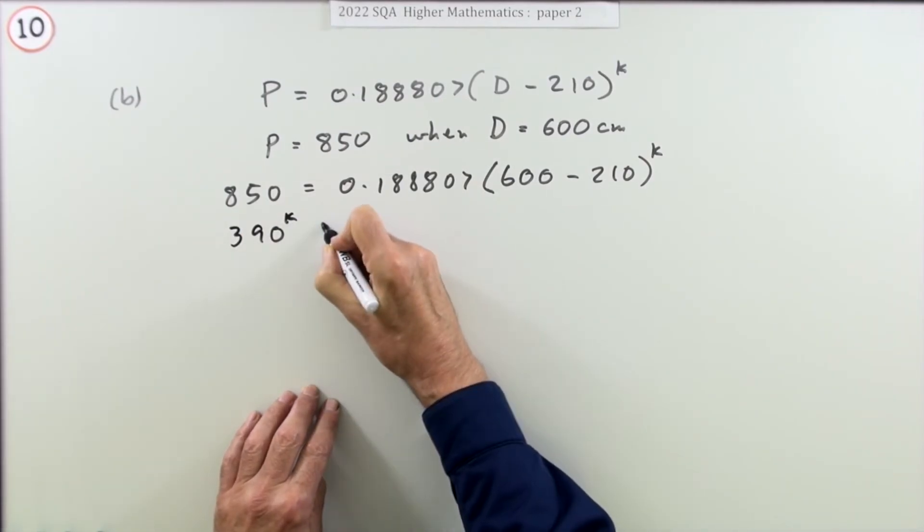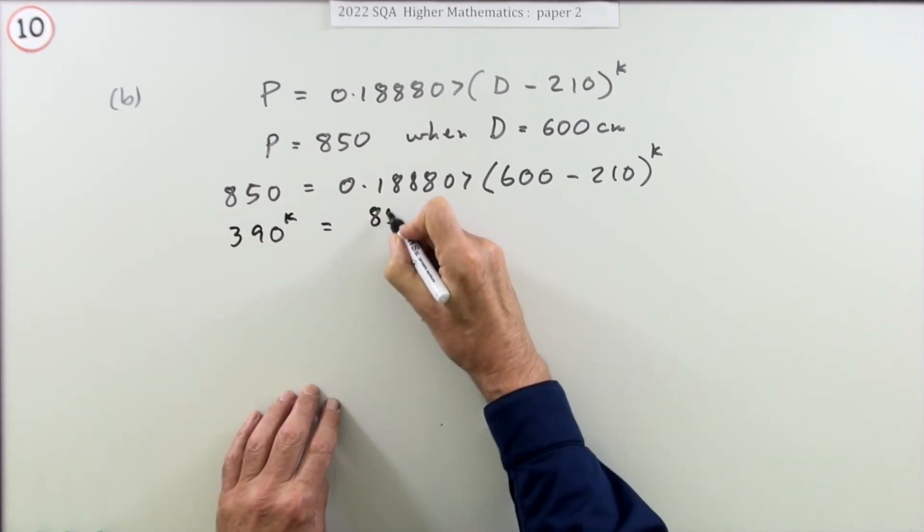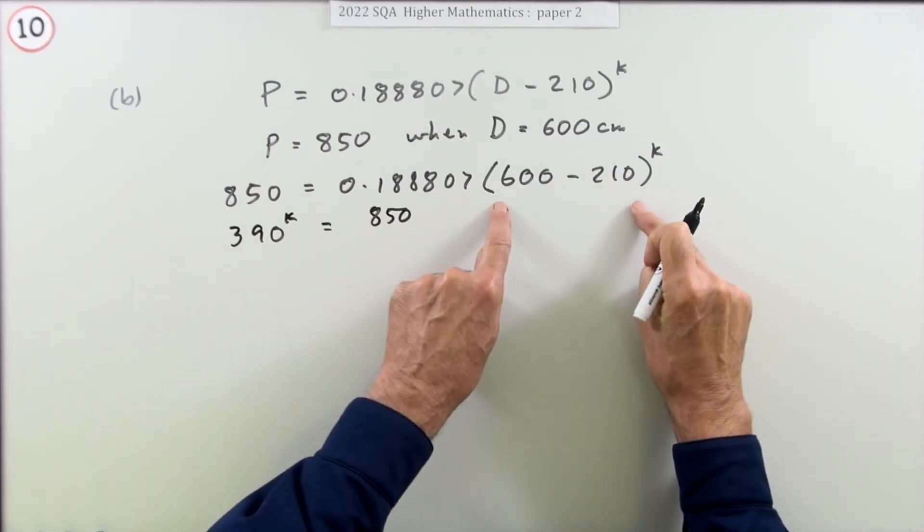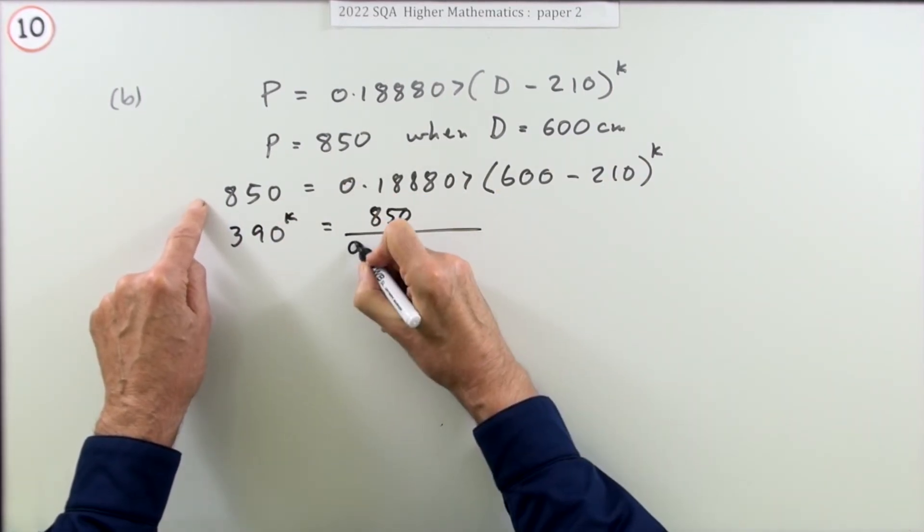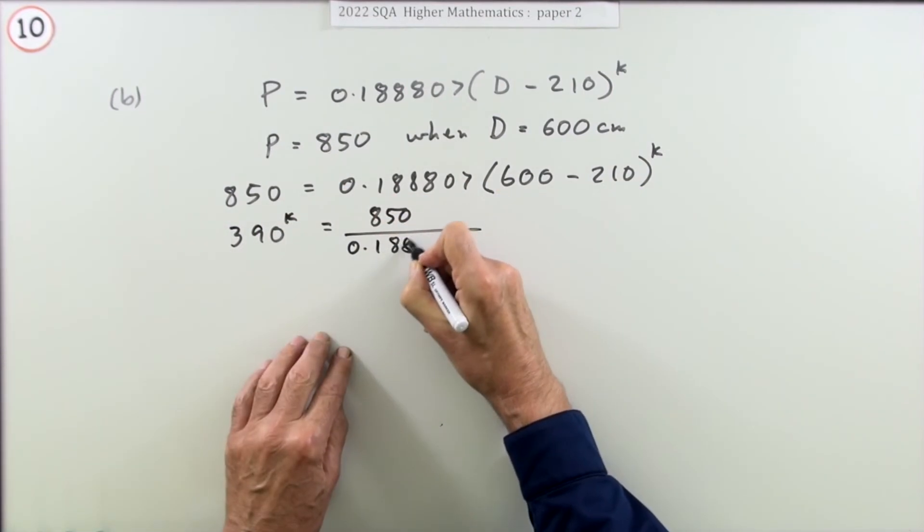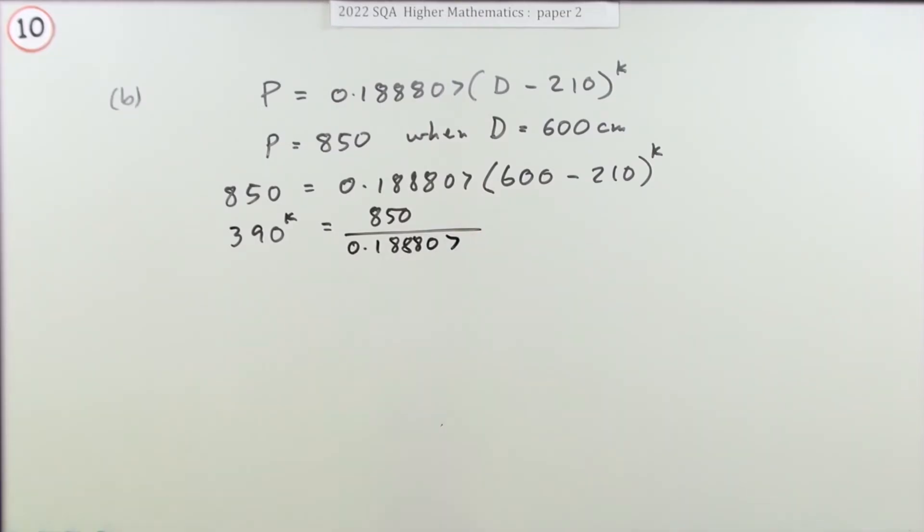So 390 to the power k—writing it backwards—will be 850 divided by 0.188807. I've gone ahead with the marks: the first mark was just for putting those two figures into that.